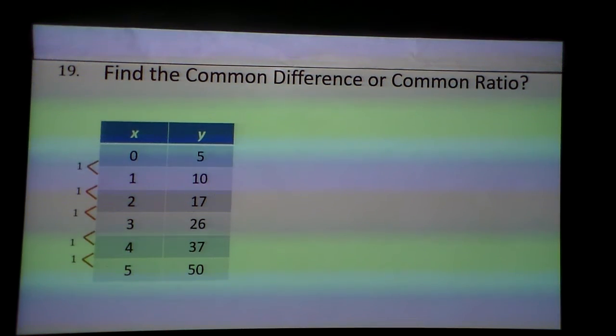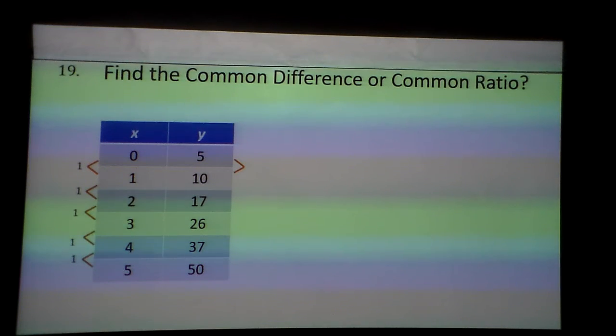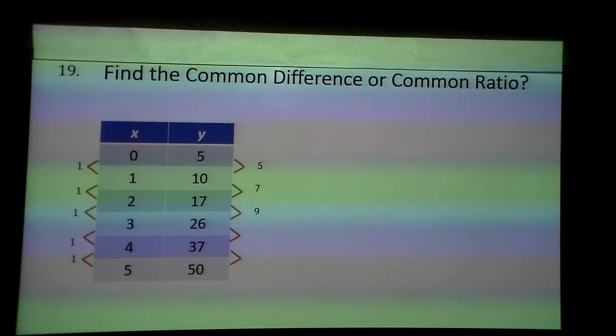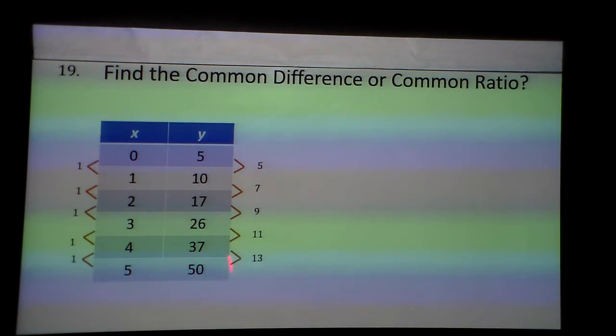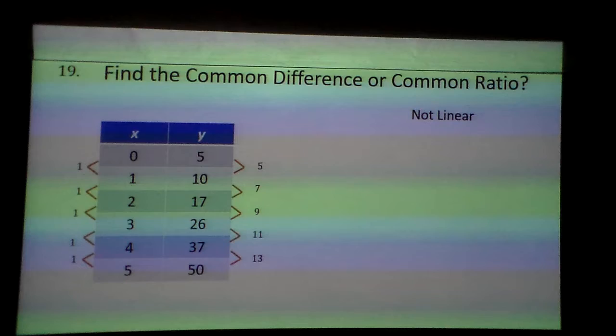So here's another one, common difference, x goes up by 1's. And what I'm going to do is I'm always going to subtract to find the difference on each of those. Now here's what I notice. The first set of numbers are not all the same, so that tells me it's not linear.